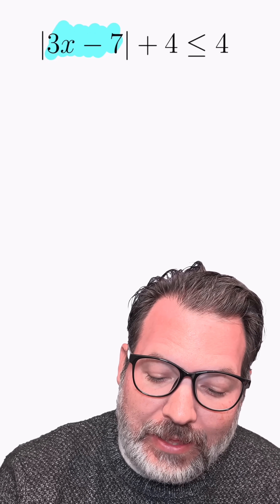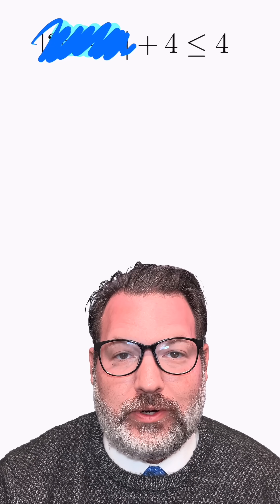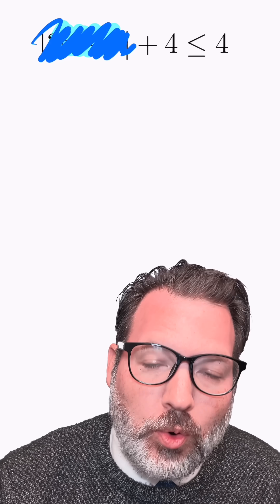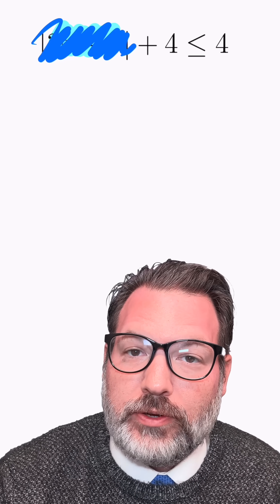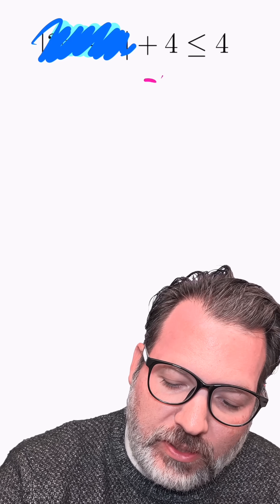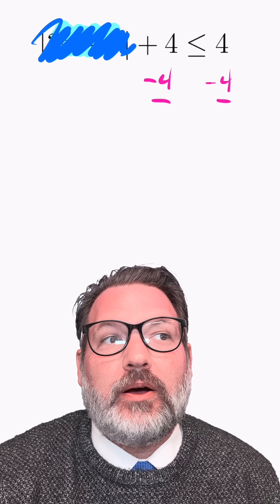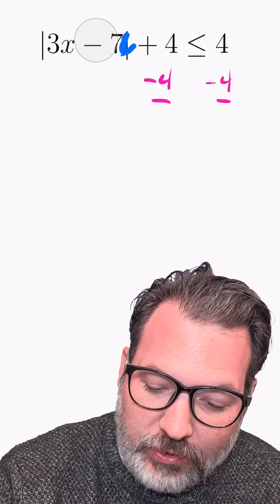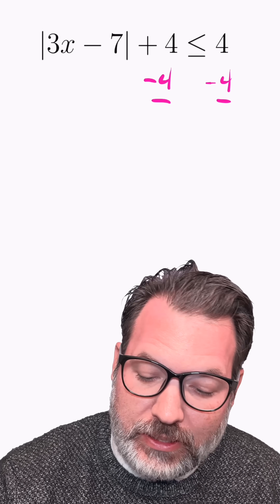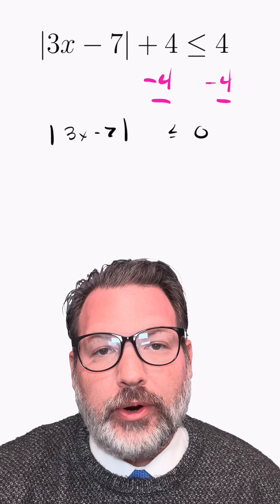That's actually exactly what we need here, because we have some quantity — it doesn't even matter what it is, ignore it for a second. Some quantity plus 4 is less than or equal to 4. If we subtract that 4 from both sides of the inequality right now, we can get a better sense of what this must mean. Whatever is behind this blank on its own must be less than or equal to 0.